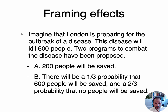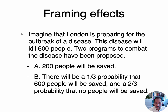Imagine that London is preparing for the outbreak of a disease that will kill 600 people if left untreated. Two programs have been proposed. Option A: 200 people will be saved. Option B: there will be a one-third probability that 600 people will be saved, and a two-thirds probability that no people will be saved. They found that the majority of subjects liked option A — 200 people will be saved. With option B there's a 66% probability that nobody is going to be saved, and nobody wants to take that risk. So most people chose option A.